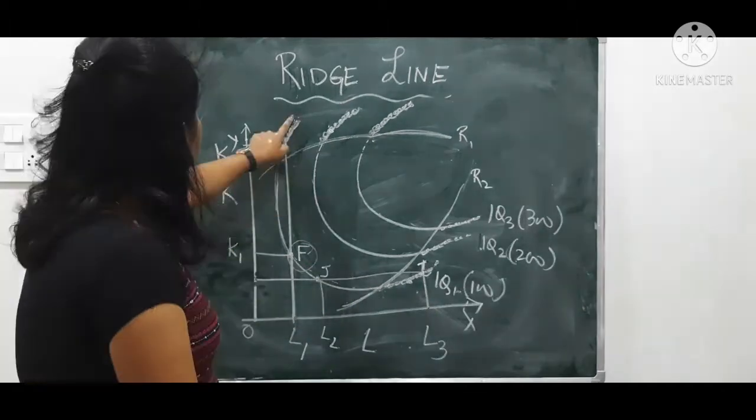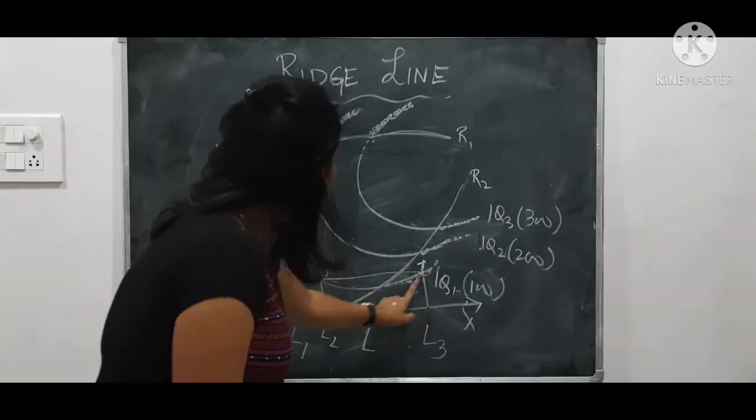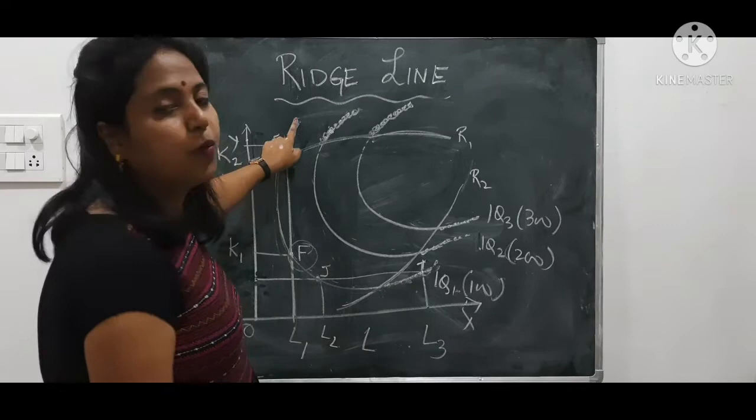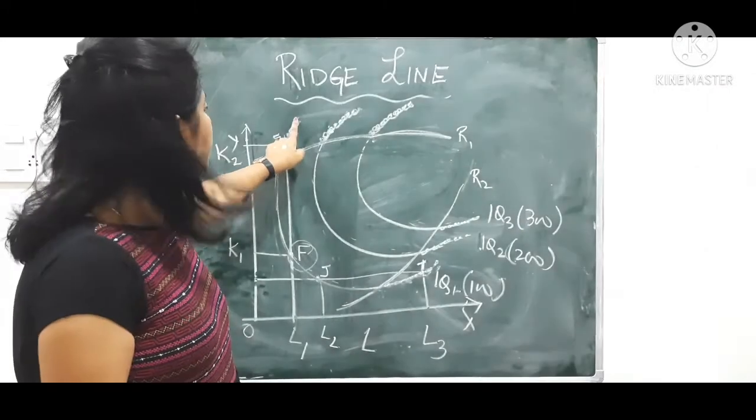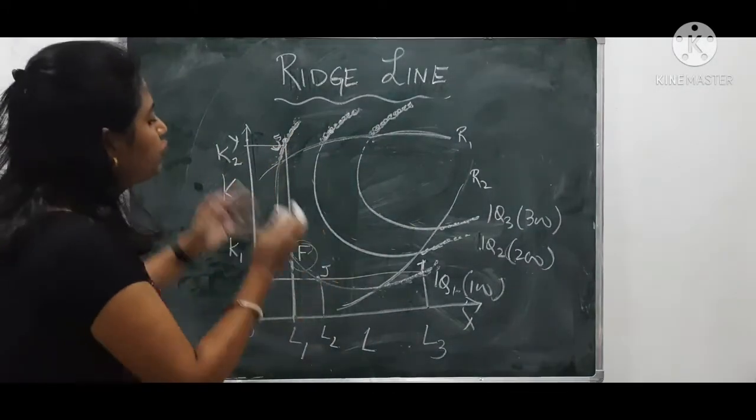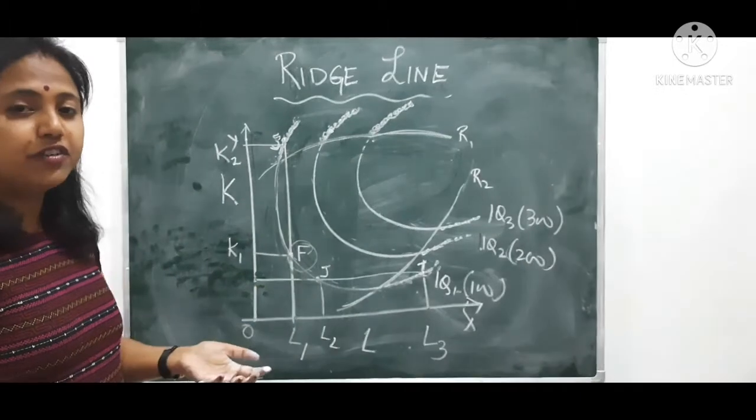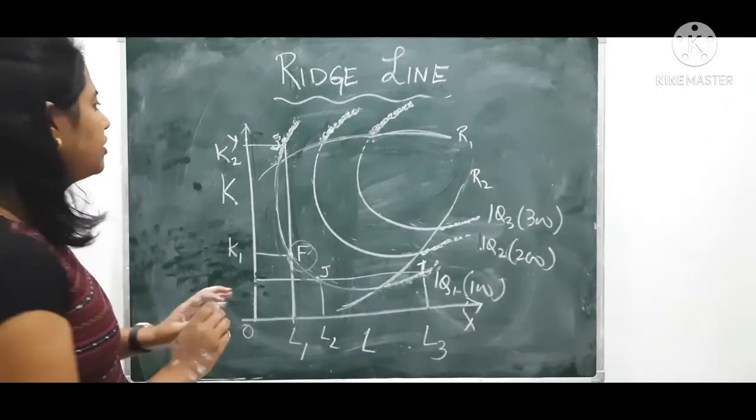So what I want to say is that in an isoquant curve, all points are not efficient. Now, how to find which point is not efficient, which point is more efficient?